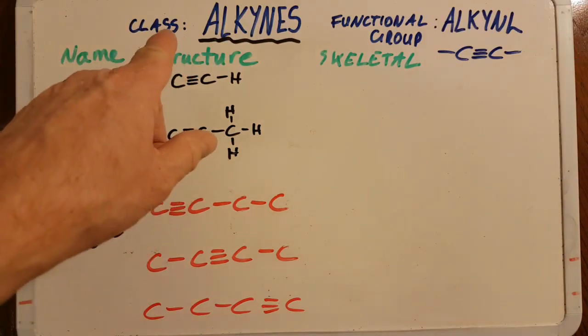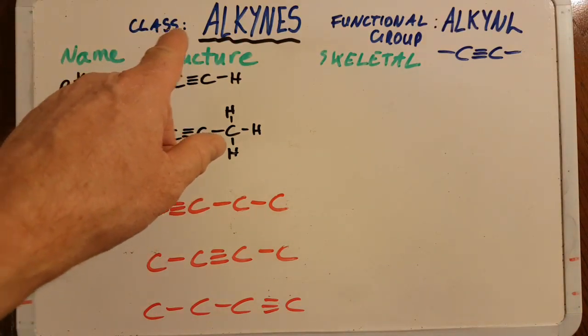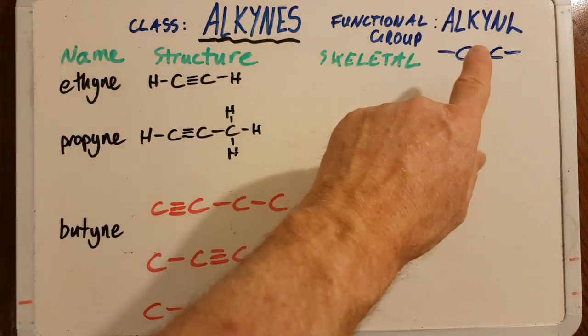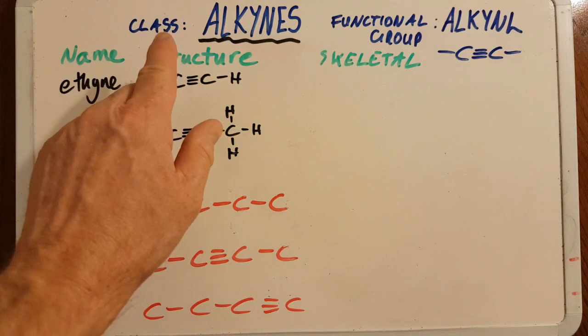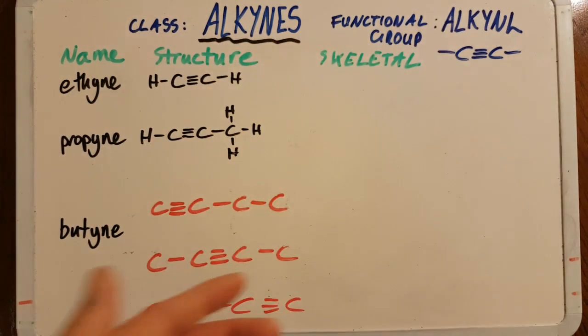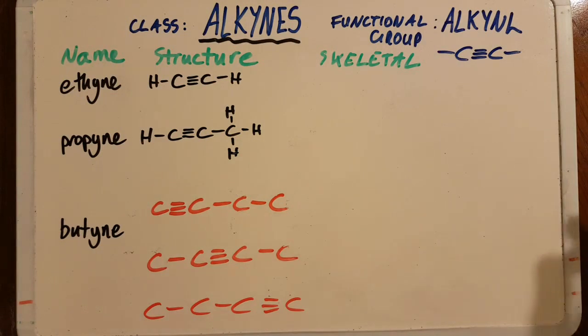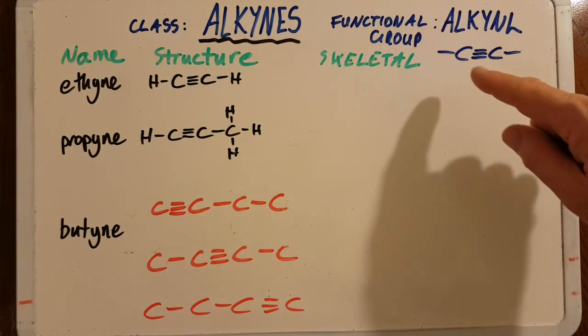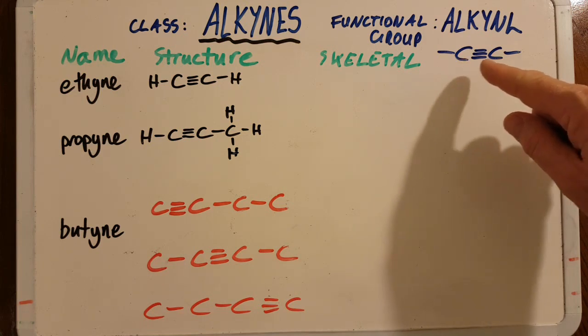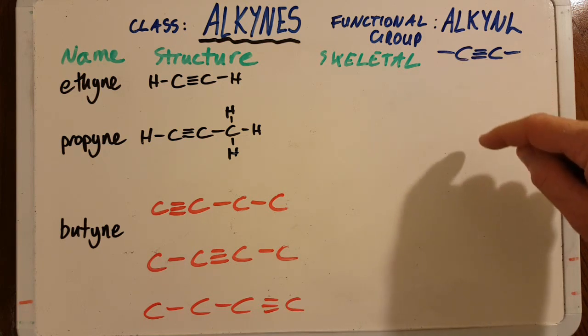Let's look at the class of organic chemicals called the alkynes. The functional group is the alkynyl. The IB is getting fussy now that you understand the class is that and the functional group is that. Every alkyne must have this alkynyl functional group, which is two carbons with a triple bond in it.